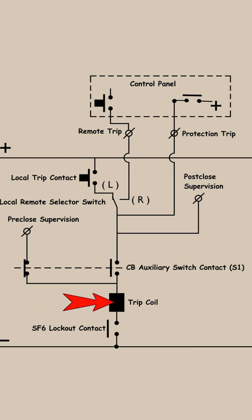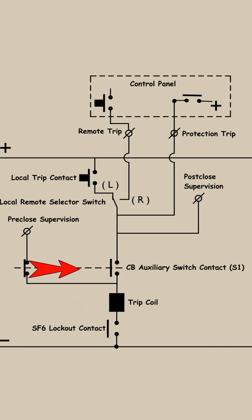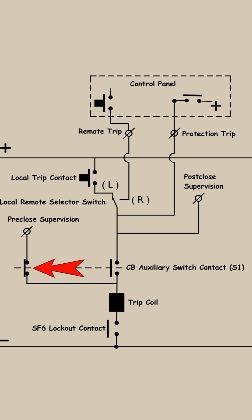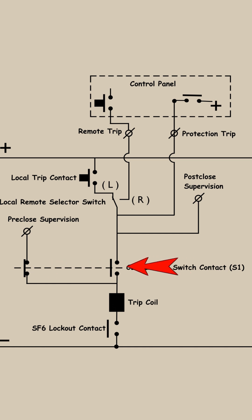Here, you can see the trip coil. This contact is a normally open (NO) contact of the auxiliary switch of the circuit breaker. And this is the normally closed (NC) contact of the auxiliary switch of the circuit breaker. So when the circuit breaker is in the open condition, this switch will be in the open position and this switch will be in the closed position.